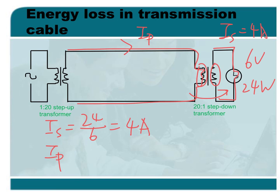So IP originally in the primary coil should be 4A over 20, which means 0.2A.